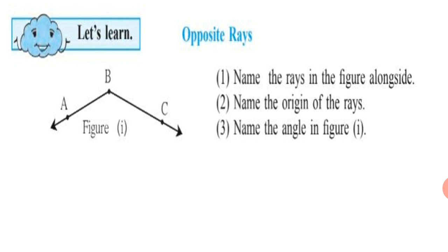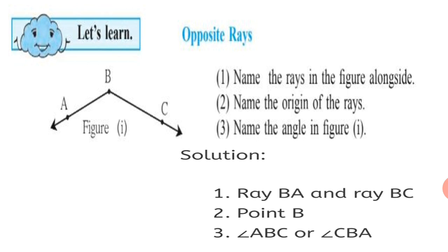Today, let's learn about opposite rays. Look at the figure given alongside. Name the rays in the figure: ray BA and ray BC. The origin of the rays is vertex B. The name of the angle is angle ABC or angle CBA. So, ray BA and ray BC are the rays, point B is the origin, and angle ABC or angle CBA is the name of the angle in figure 1.